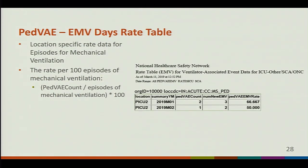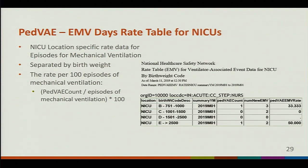There is also the option of running your PVAE EMV rate tables, which provide rate level data for episodes of mechanical ventilation for ICU and other locations. The rate per 100 episodes of mechanical ventilation is calculated by taking your Ped VAE count, dividing it by the episodes of mechanical ventilation, and multiplying by 100. We use 100 as the multiplier because the denominator — your EMV episodes — is so small. The Ped VAE NICU EMV table is calculated at the location and birth weight code level. For birth weight code B for January 2019, this location had a Ped VAE EMV rate of 33.333.